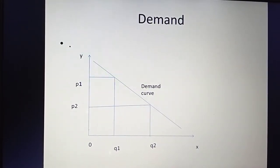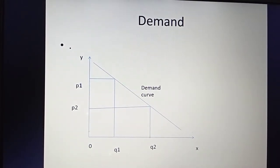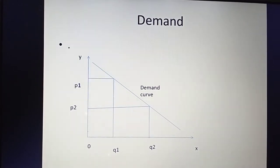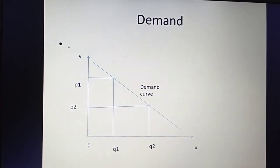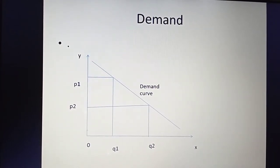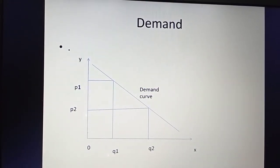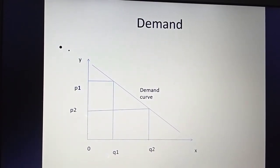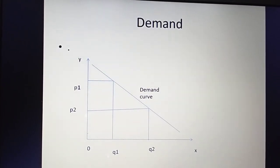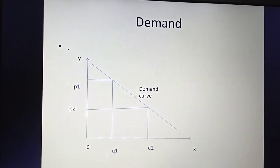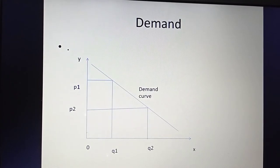That means there is an opposite relationship between the price and quantity demanded of the commodity. When the price is OP1 and quantity is OQ1, and when the price is OP2 and the quantity demanded is OQ2, we can join those particular points and we will get one curve. That curve is a downward sloping curve, and that downward sloping curve is the demand curve.